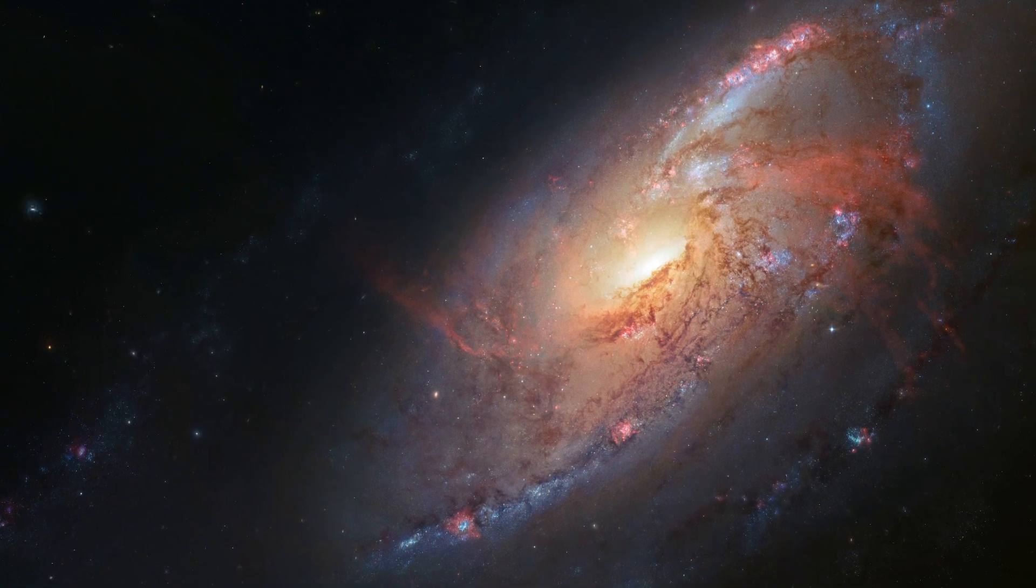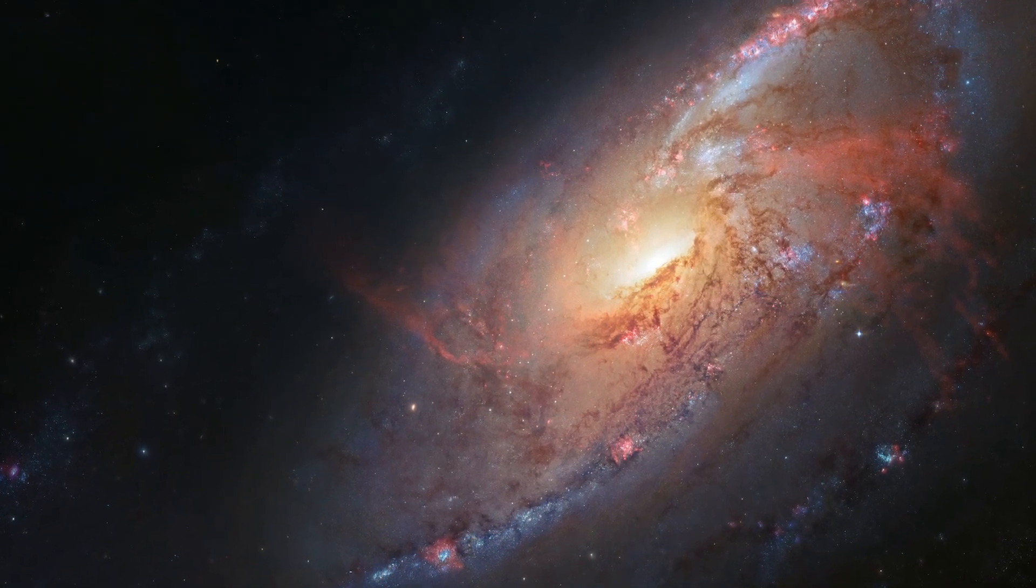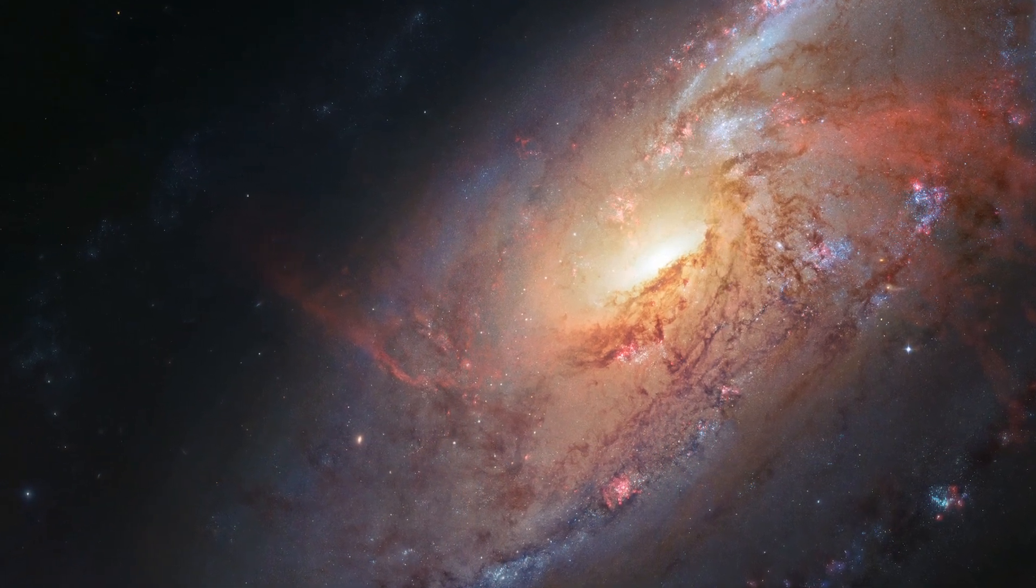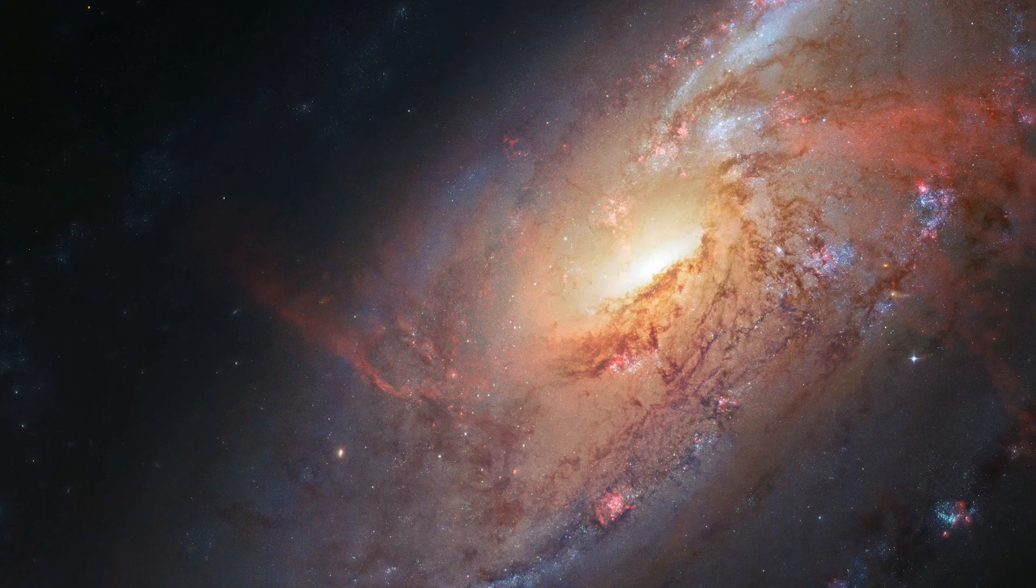Located a little over 20 million light-years away, practically a neighbor by cosmic standards, Messier 106 is one of the brightest and nearest spiral galaxies to our Milky Way.